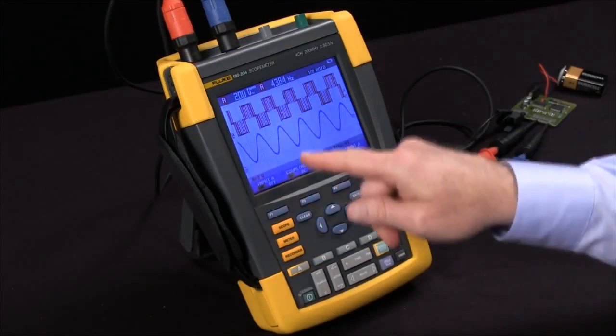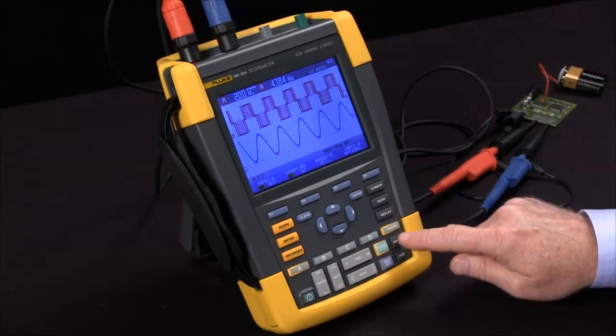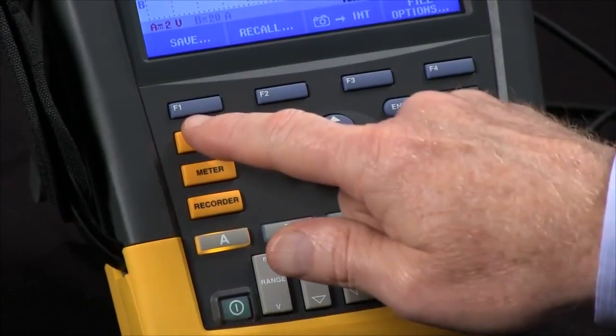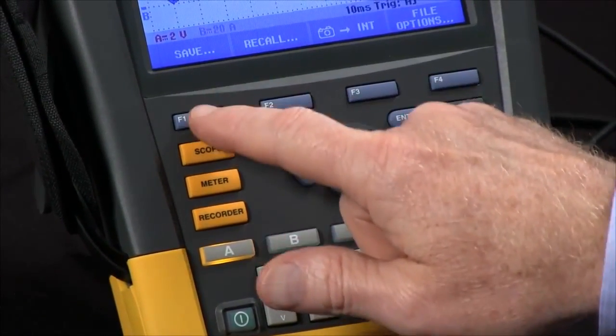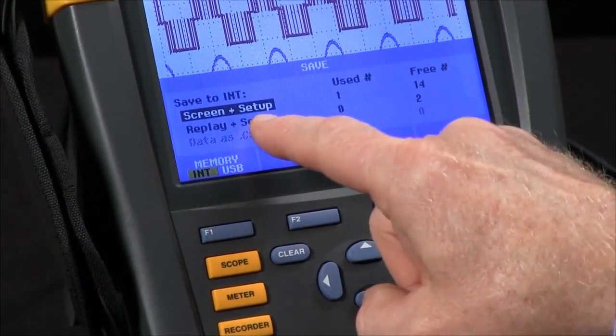We've got our reading setup, our waveform set, we come down to hit the save button near the bottom right hand corner, and then the F1 key to save. At this point, we've got screen and setup highlighted.